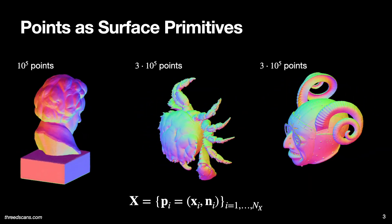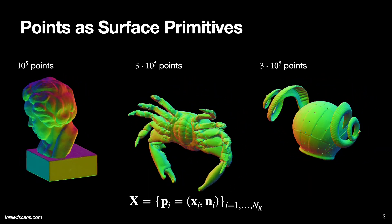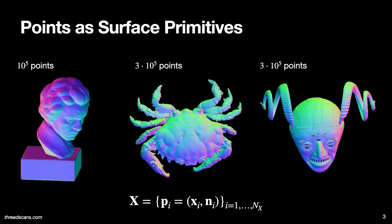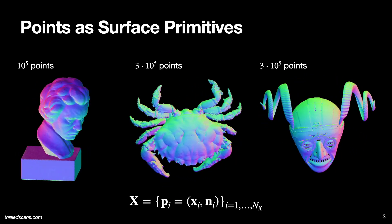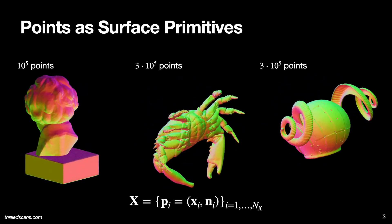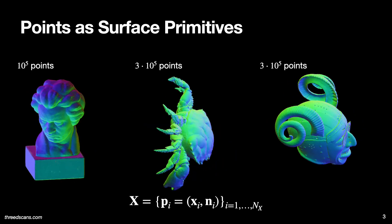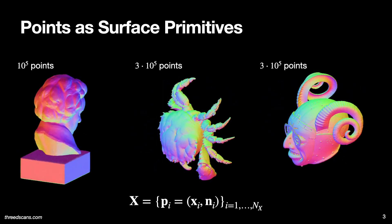We begin this work by revisiting point clouds as surface modeling primitives and demonstrate how surfaces of arbitrary complexity can be efficiently modeled as sets of 3D points with associated features such as normal directions. Here we visualize three scans represented by our method.